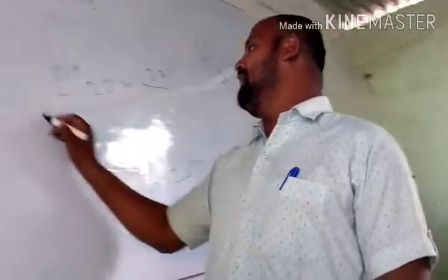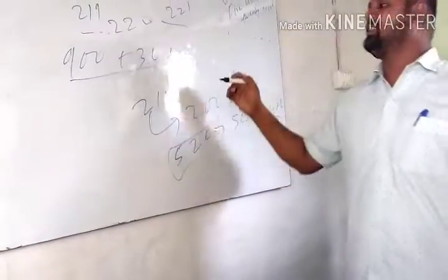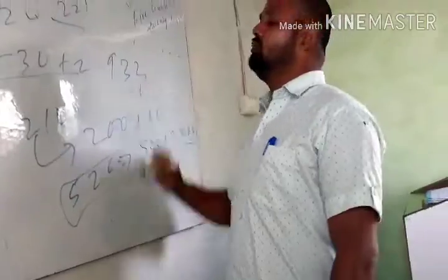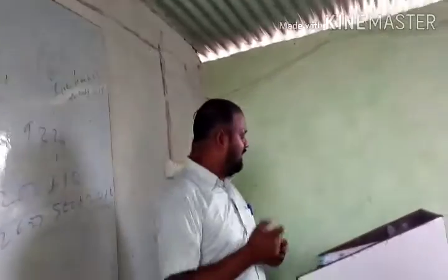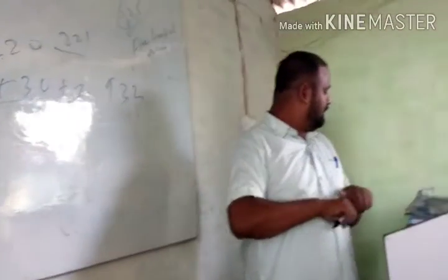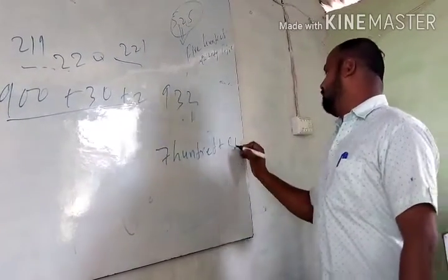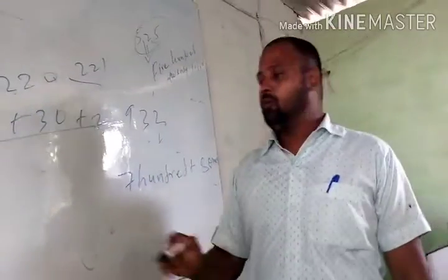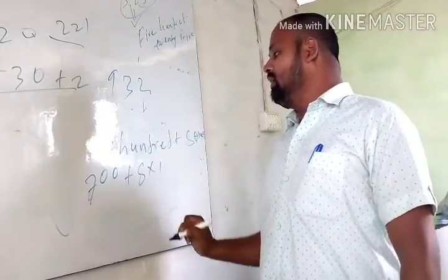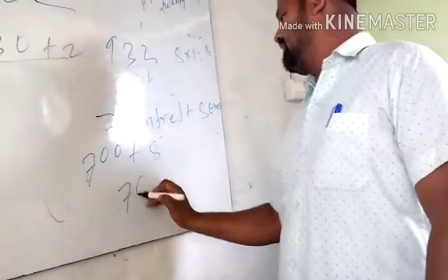If we have numbers like 930 plus 2, this is the expanded form, and the short form will be 932. Similarly, if you have a question like 700 plus 8 ones — 8 ones means 8 — so this will be 708.